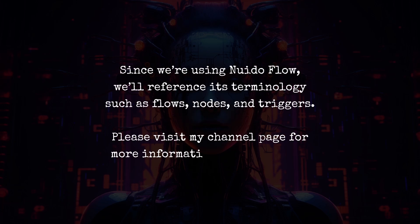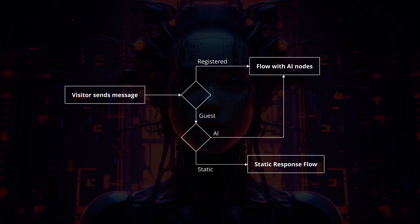Since we're using Nuido Flow, we'll reference its terminology like flows, nodes, and triggers. If you're new to this channel or unfamiliar with Nuido Flow, visit my channel page for introductory content to get up to speed. Here's how it works: when a visitor sends a message, we first determine whether they're a registered user or a guest. Based on their status, we trigger the appropriate flow. This setup requires configuring separate flows for registered users and guests. For guests, you can respond with a static message prompting them to sign in before proceeding — ideal if you have limited computing resources or want to encourage sign-ups.